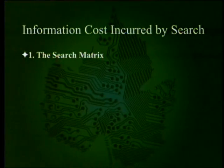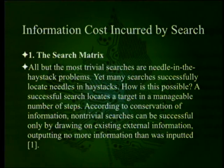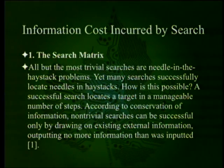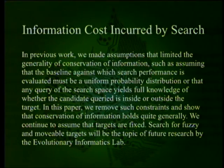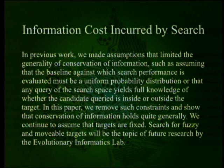Information cost incurred by search — the search matrix. All but the most trivial searches are needle-in-the-haystack problems, yet many searches successfully locate needles in haystacks. A successful search locates a target in a manageable number of steps. According to conservation of information, non-trivial searches can be successful only by drawing on existing external information, outputting no more information than was inputted. In this paper, we remove prior constraints and show that conservation of information holds quite generally.